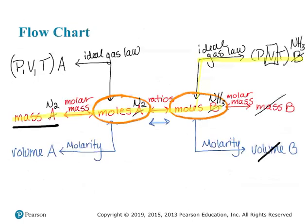These flowcharts are super handy. Once you figure out what you're given and what you need, you apply it to the chart. On the left, identify what you're given: volume and concentration, mass, or pressure, volume, and temperature? Then figure out what you need: volume of a gas, mass, or volume from concentration? Definitely utilize this flowchart — or create your own. This is just one way to approach these problems.